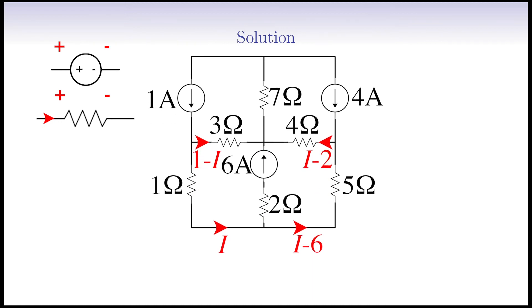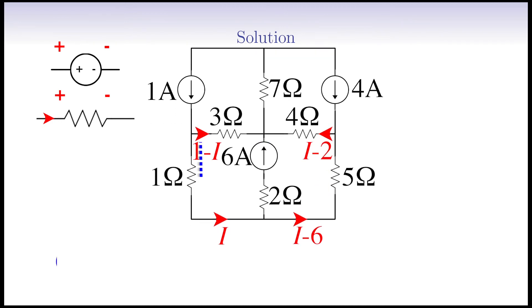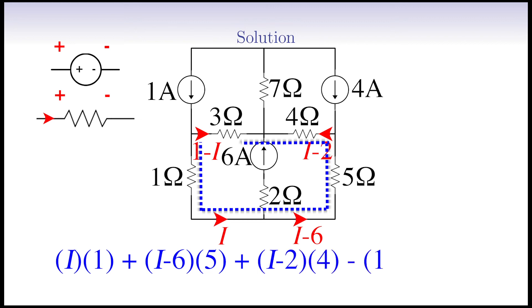Starting from the 1 ohm resistor, we get I multiplied by 1, plus I minus 6 multiplied by 5, plus I minus 2 multiplied by 4, minus 1 minus I multiplied by 3, equal to 0. Note that for the 3 ohm resistor, we applied a minus sign since we are moving opposite to the current direction. And for the other resistors, we applied plus sign since we move in the current directions.